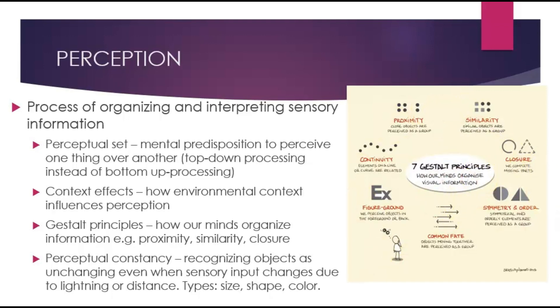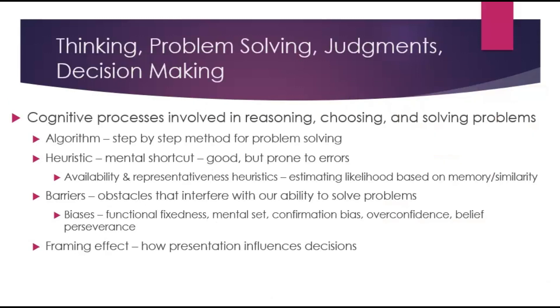Look here on the right. We also have perceptual constancy, where you recognize objects as unchanging even when sensory input is changing due to lighting or distance. For example, you see a car in the distance — it might look tiny, but we know it has not shrunk.